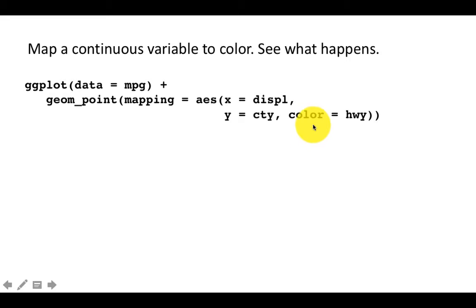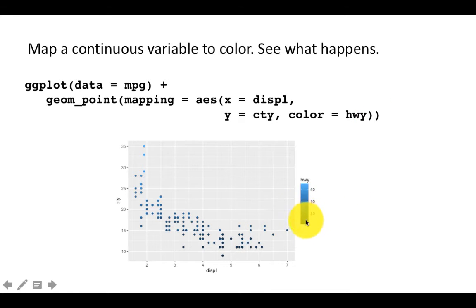Now try to map a continuous variable to color and see what happens. I said color equals highway mileage - hwy tells for each car what its highway mileage is. Earlier we had color equals class which was a categorical variable, but here highway is continuous. It still works - it created a continuum of colors from light to dark.